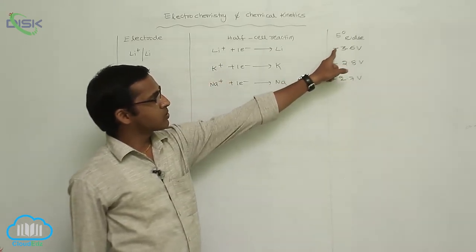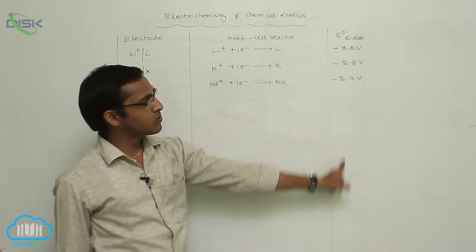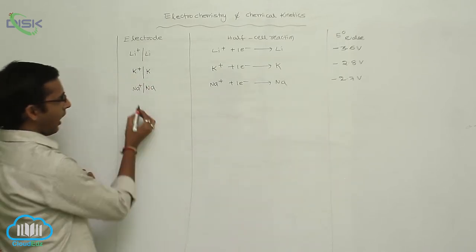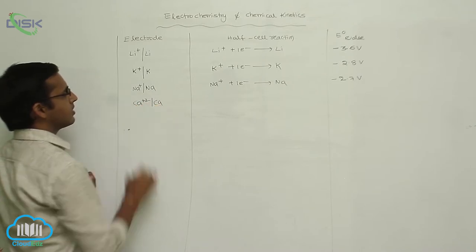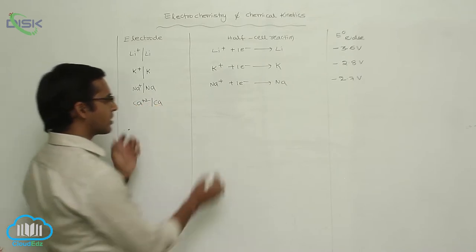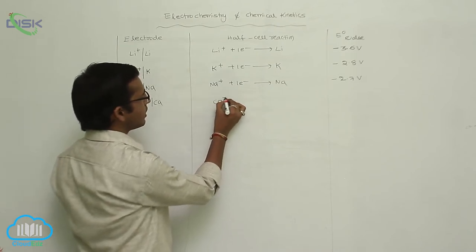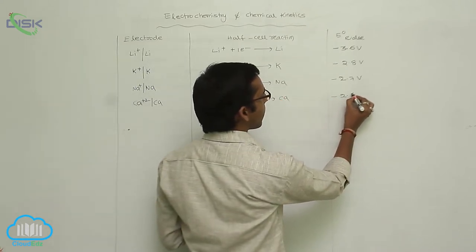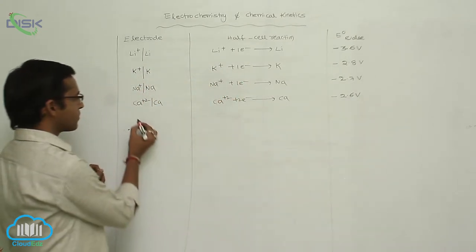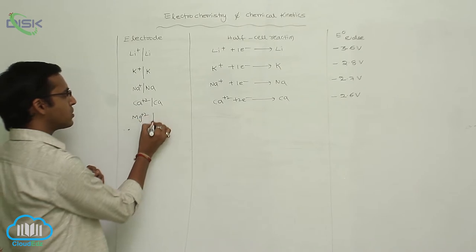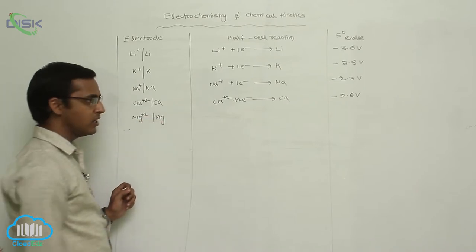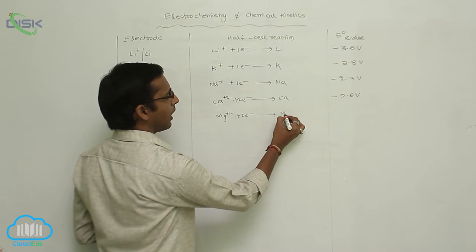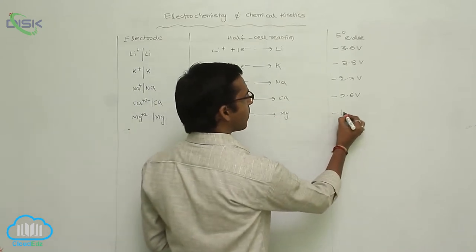Next is calcium: Ca²⁺ gaining two electrons is converted to Ca metal. Its E° value is −2.6 V. After calcium is magnesium: Mg²⁺ gaining two electrons is converted to Mg metal. Its E° value is −1.6 V.